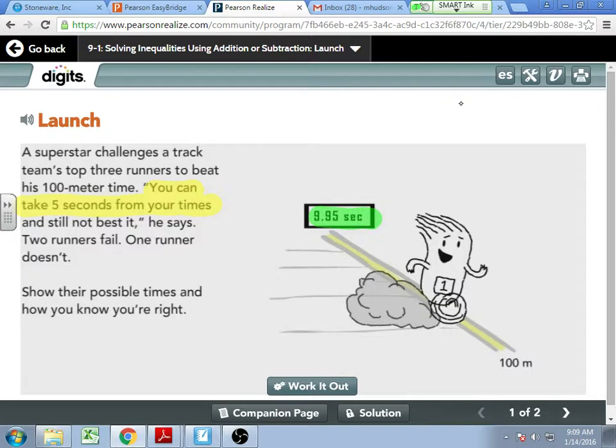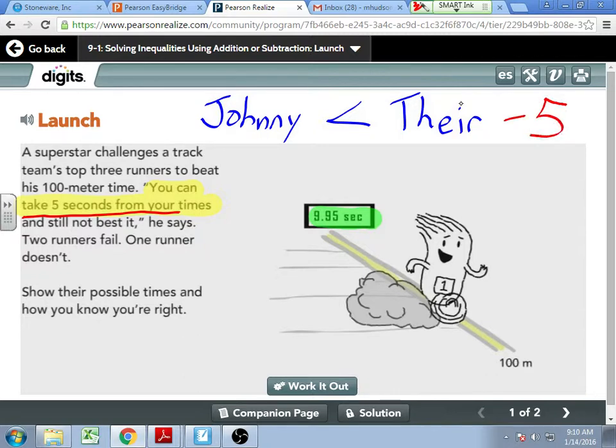So how do we set that up? Because this is not an equation. Johnny's saying my time will still be less than yours. So you've got space off to the right there on your notes. I'm just going to put Johnny. Johnny has said that his time is less than anybody else, so we'll just say theirs, their time.